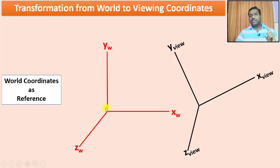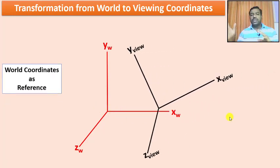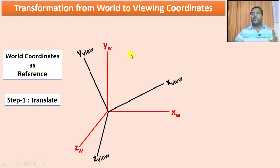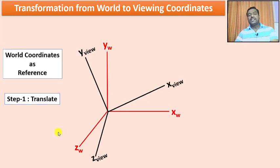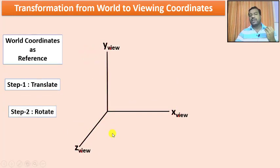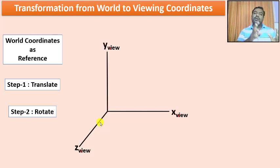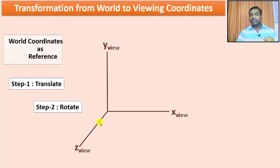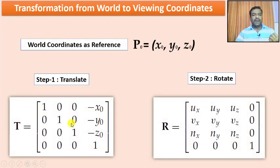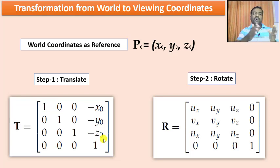Keeping the world coordinate as a reference, the first step is to translate the view coordinate so that the origin of the view coordinate is exactly at the origin of the world coordinate. The second step is to rotate or orient the view coordinate axes so they are inline and parallel with the world coordinate axes. These are the two steps to follow for transformation from world to viewing coordinates. We then form the translation matrix with minus x0, minus y0, minus z0, bringing the viewing coordinate to the origin of the window coordinate.